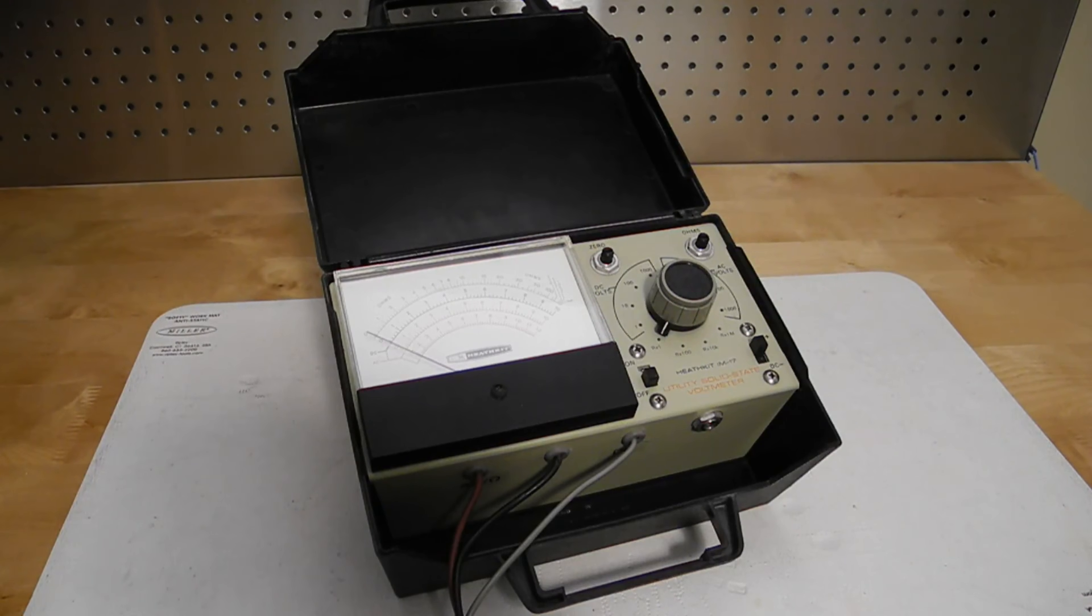I bought this unit from a local seller on eBay. It came with no manual, but was listed as working, but needed calibration. As this is the older case style, it would have been made prior to August 1970, and could have been as early as 1967.